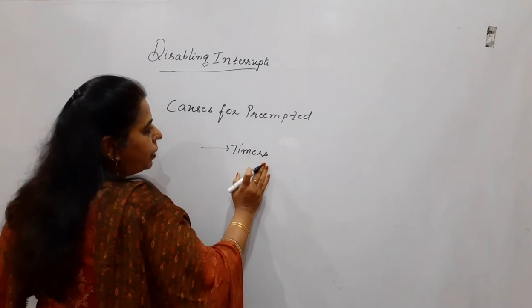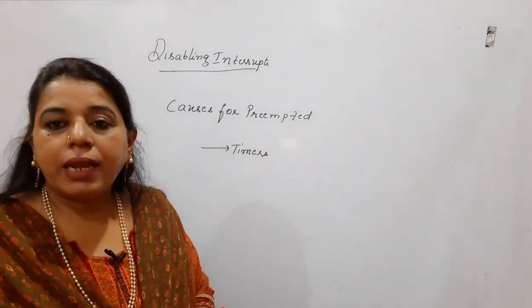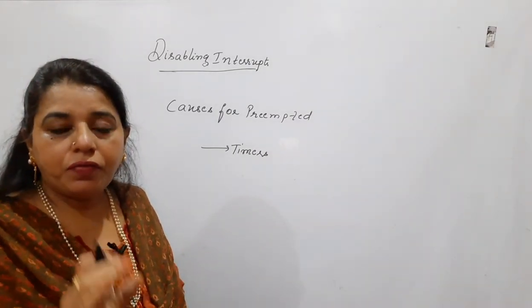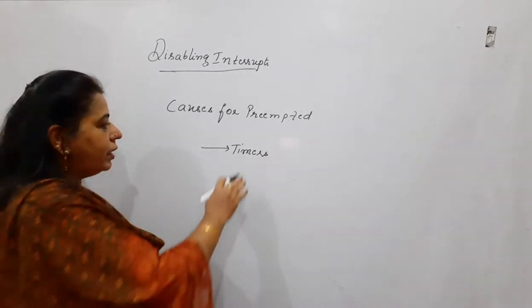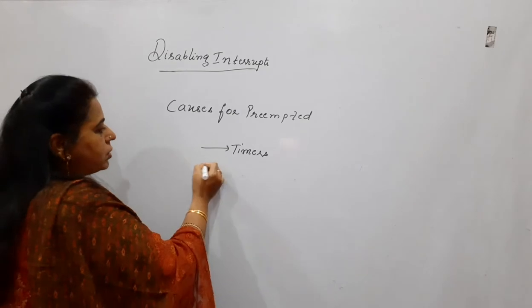Once the timer value becomes 0, because all the scheduling algorithms use the time slicing mechanism, wherein it will be executed or scheduled only for that particular period of time, for that timers are used. This is one of the reasons for preemption, for a process to get preempted.